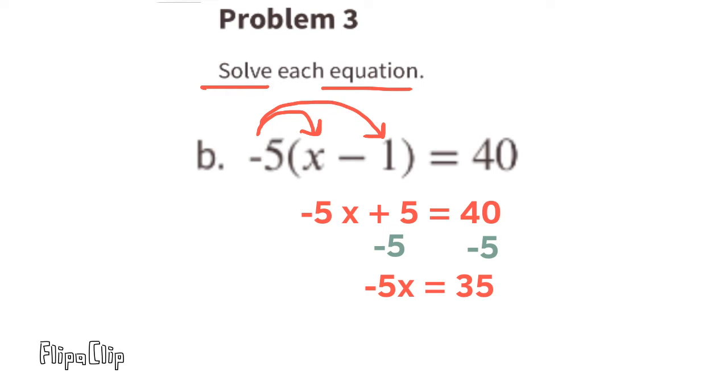Divide both sides by negative 5. x equals negative 7.